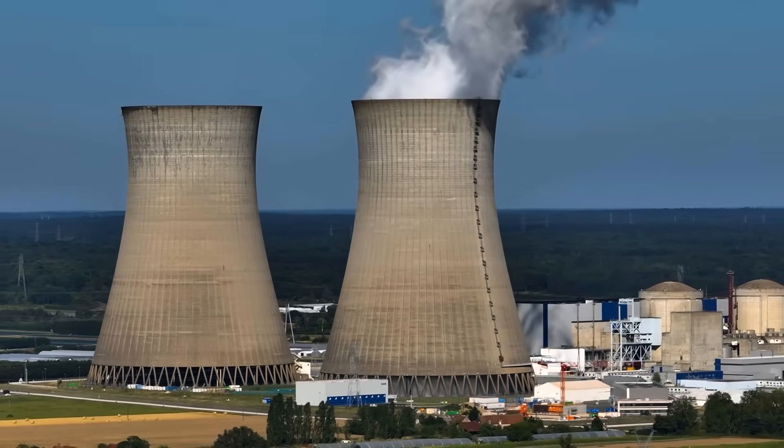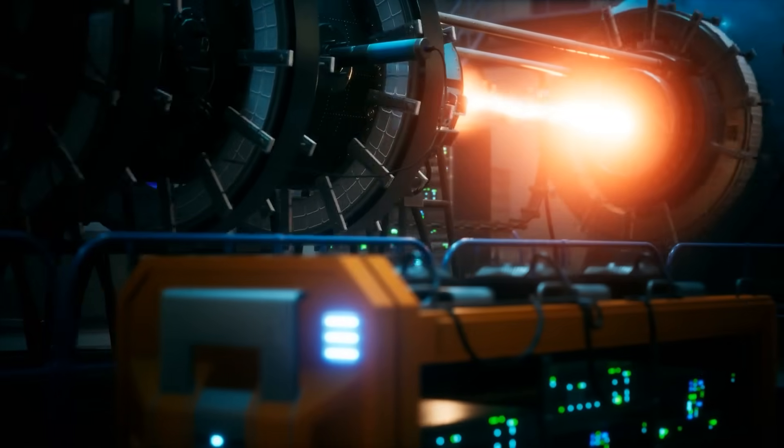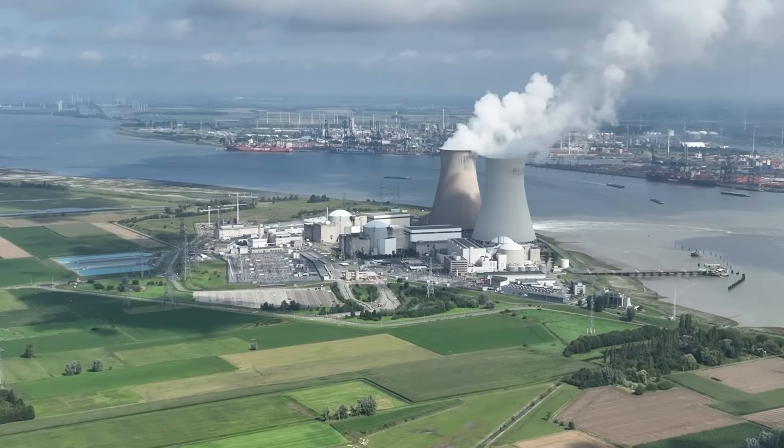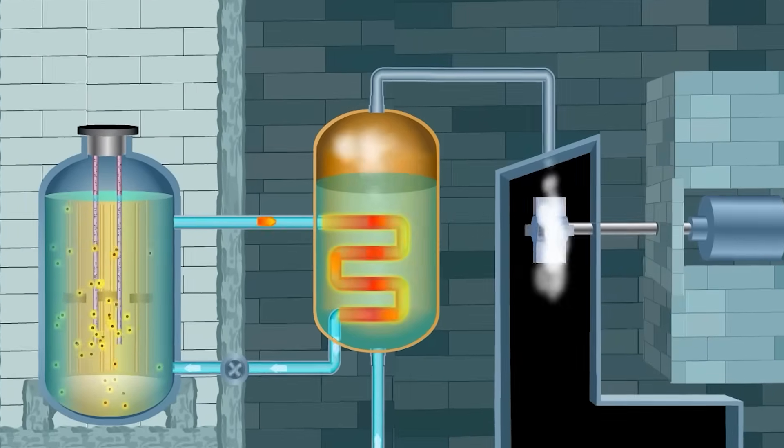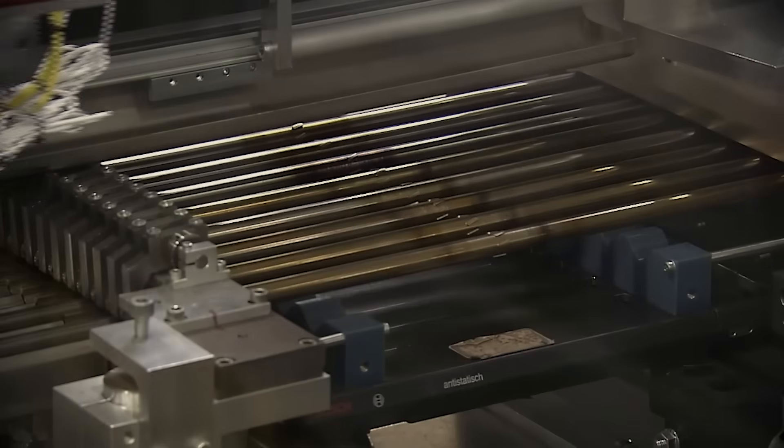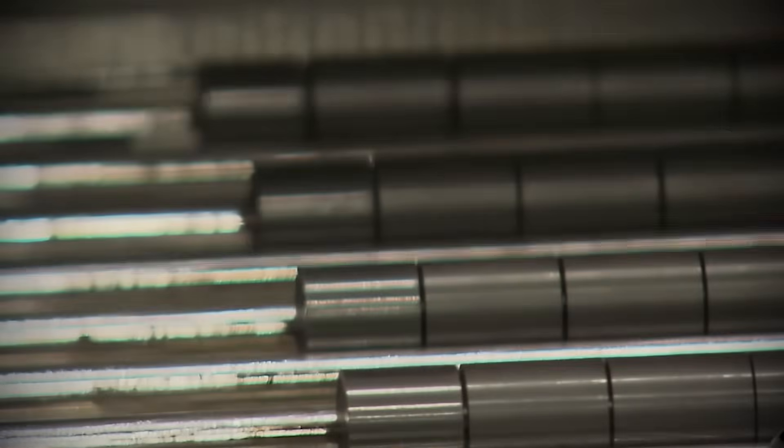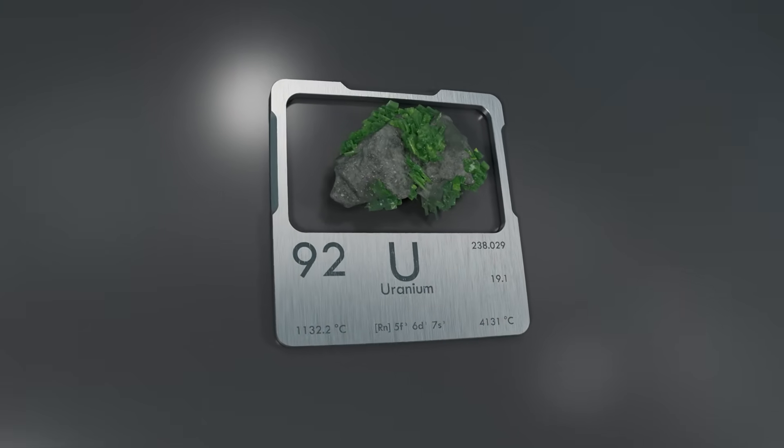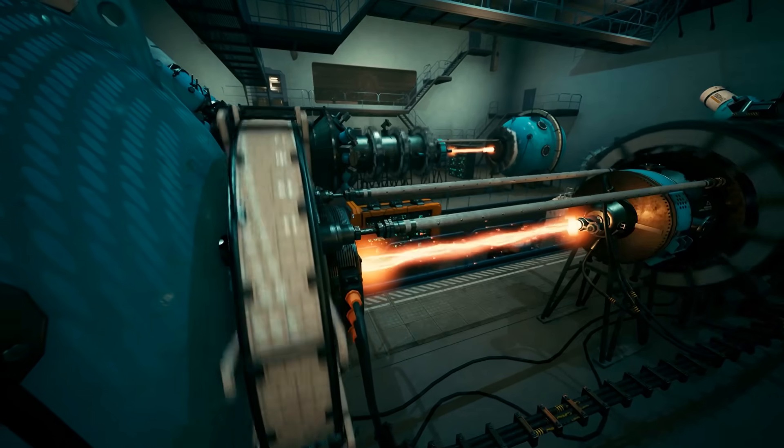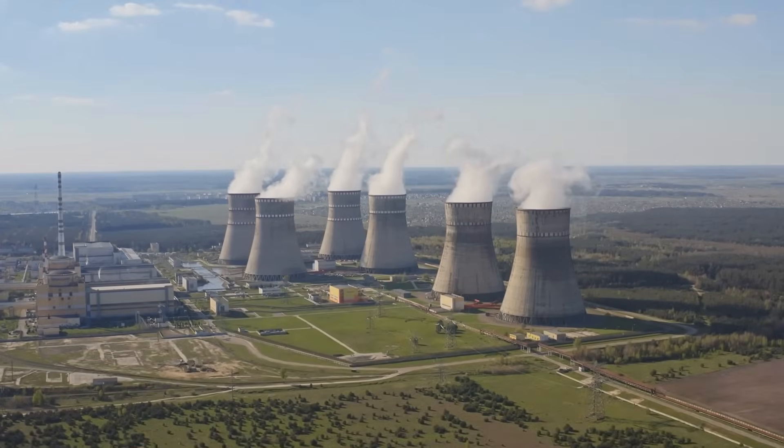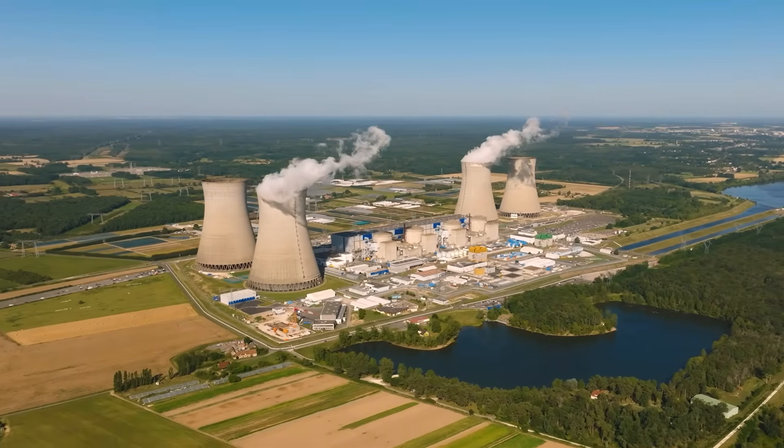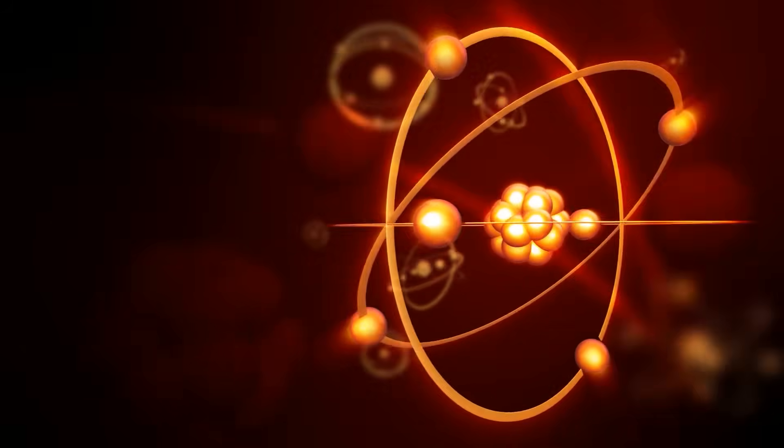This controlled fission process allows nuclear reactors to generate vast amounts of energy with minimal carbon emissions, making nuclear power a vital component of the world's energy mix. And that's how enriched uranium is transformed from a simple element into a powerful source of energy. From its discovery to the complex processes of enrichment and conversion, uranium has become a cornerstone of modern energy production. Despite its potential dangers, when handled with care and precision, it provides a nearly limitless source of clean power. Nuclear energy continues to play a crucial role in reducing carbon emissions and addressing the world's growing energy needs.